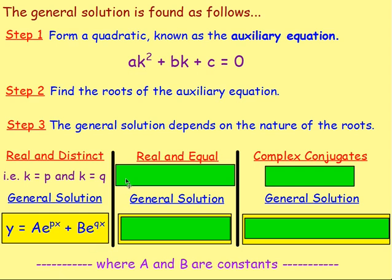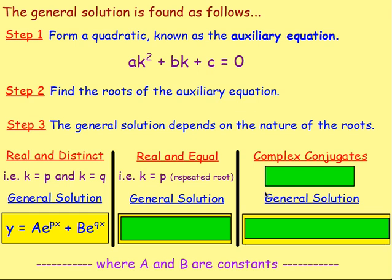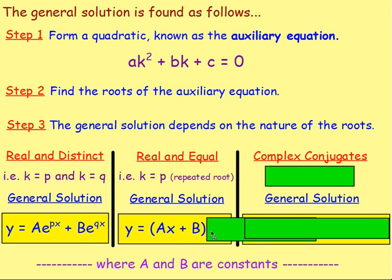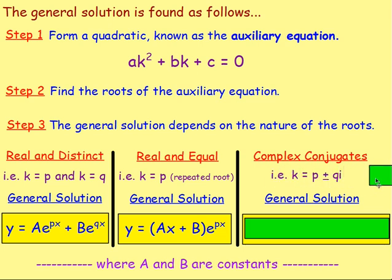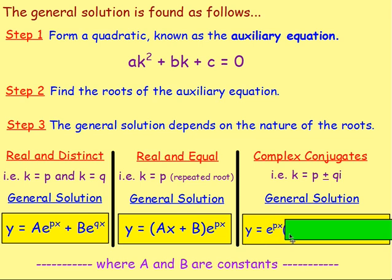If the roots are real and equal — in other words, if we have k equals p as a repeated root or double root — then the general solution will be of the form y equals (ax + b) times e to the power of px. And the last one: if you have complex conjugates, so k equals p plus or minus qi, then the general solution will be of the form e to the power of px times (a sin qx plus b cos qx).